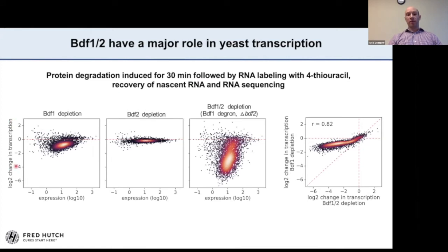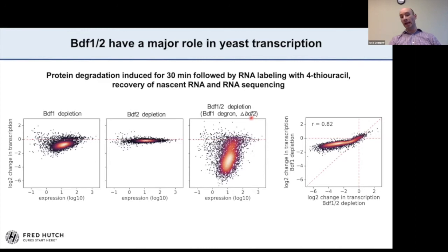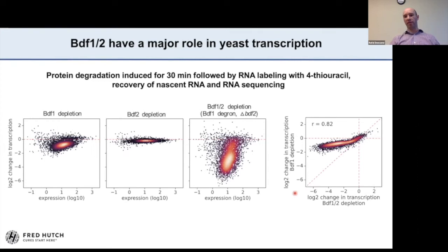I degraded either BDF1 alone, BDF2 alone, or BDF1 in a BDF2 gene deletion background, followed by sequencing of 4-thiouracil-labeled nascent RNA. Depletion of BDF2 alone had minimal effects on transcription. Depletion of BDF1 causes modest changes, but many genes go down at least two-fold. These changes become much more pronounced when BDF1 degradation is coupled with BDF2 deletion — in that experiment, the median change is about eight-fold. The results are consistent with the hypothesis that BDF1 and BDF2 have redundant roles, with BDF1 being the dominant factor.